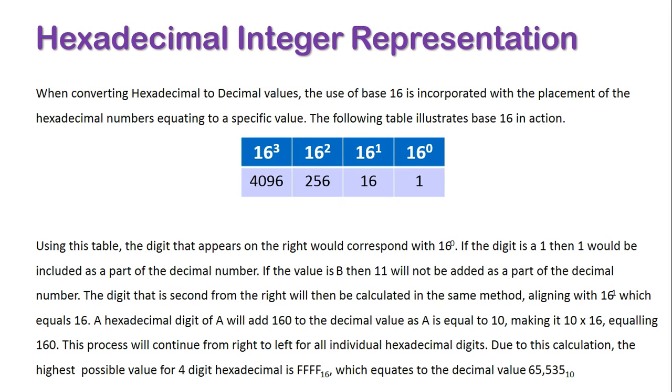Here is 4 digits of hexadecimal. So 16 to the power of 0, 16 to the power of 1, 16 to the power of 2, and 16 to the power of 3, and what they are equivalent to when they are actually calculated. So 1, 16, 256, and 4096.